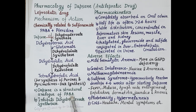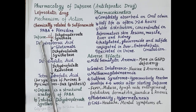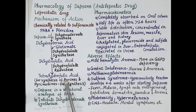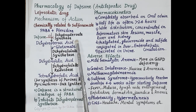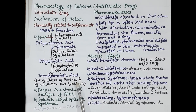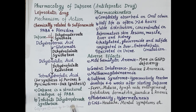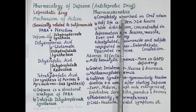Dapsone is a structural analog of PABA — meaning the structure of dapsone is similar to that of PABA. So dapsone itself gets incorporated in place of PABA, and this prevents the synthesis of folic acid. In addition, dapsone also inhibits the enzyme dihydropteroate synthase, which further prevents folic acid synthesis in bacteria. This is the mechanism by which dapsone produces a leprostatic effect.